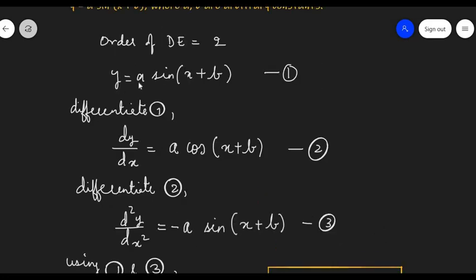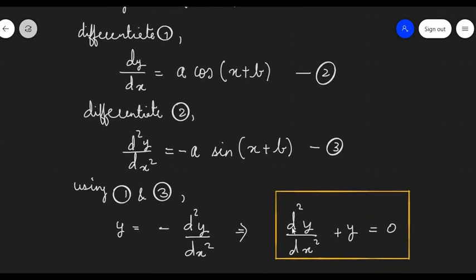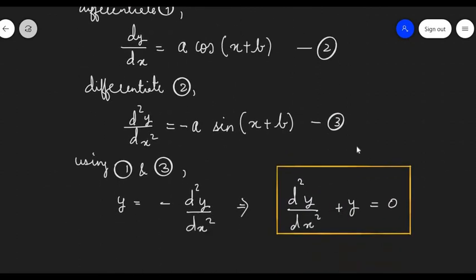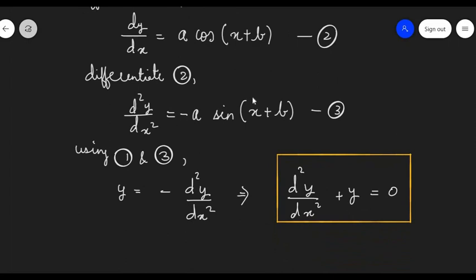The differential equation of y = a·sin(x + b) is given by d²y/dx² + y = 0. Since we had two arbitrary constants a and b, the order of the differential equation is 2. You understood how we calculated this? Keep practicing. Let's meet in the next video.